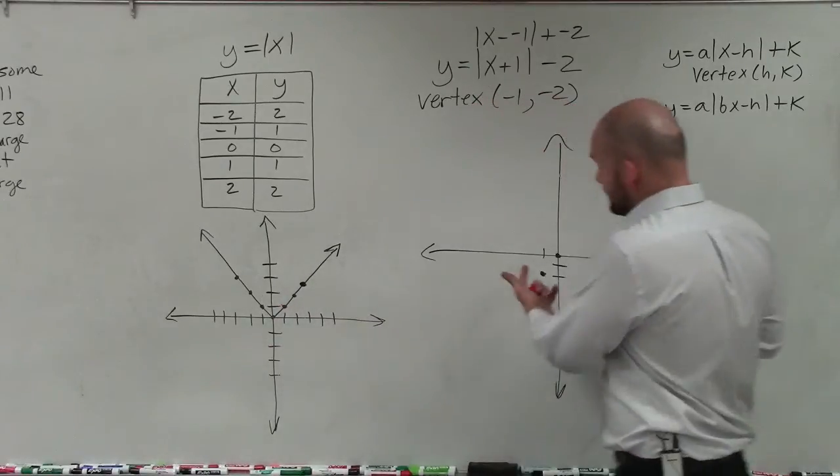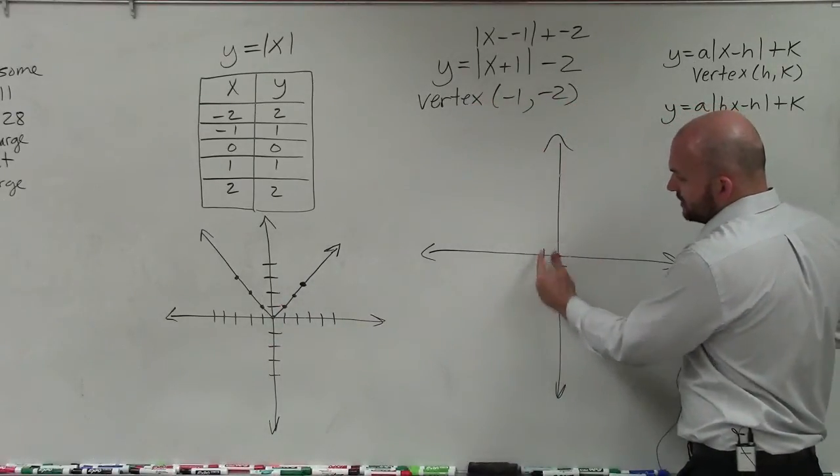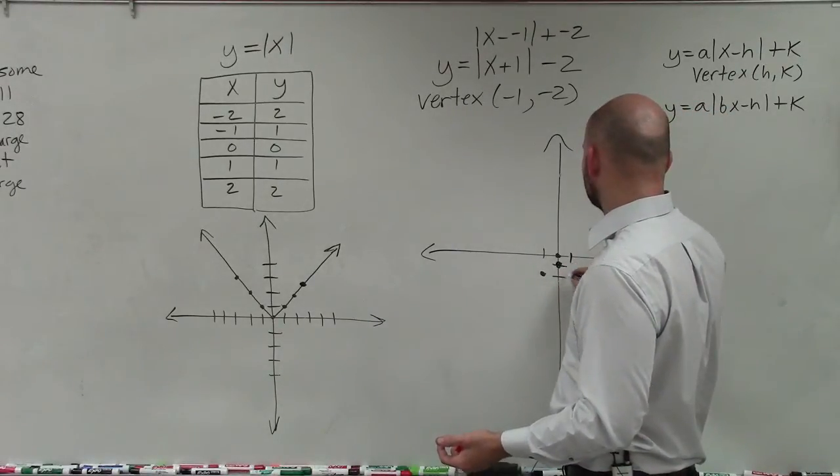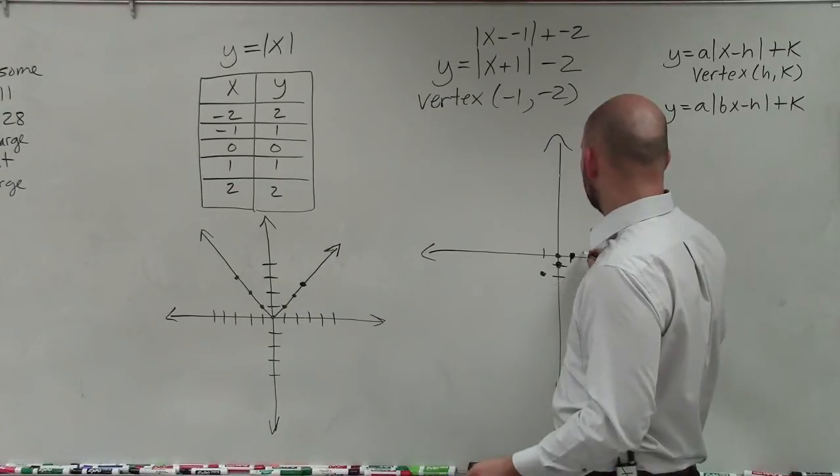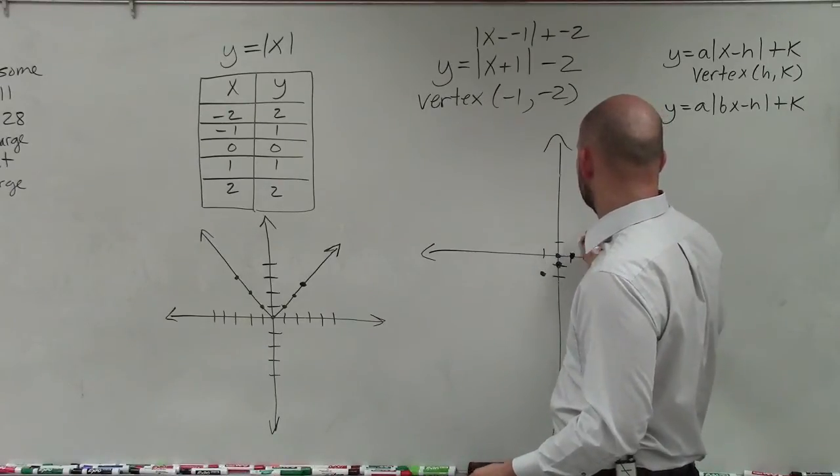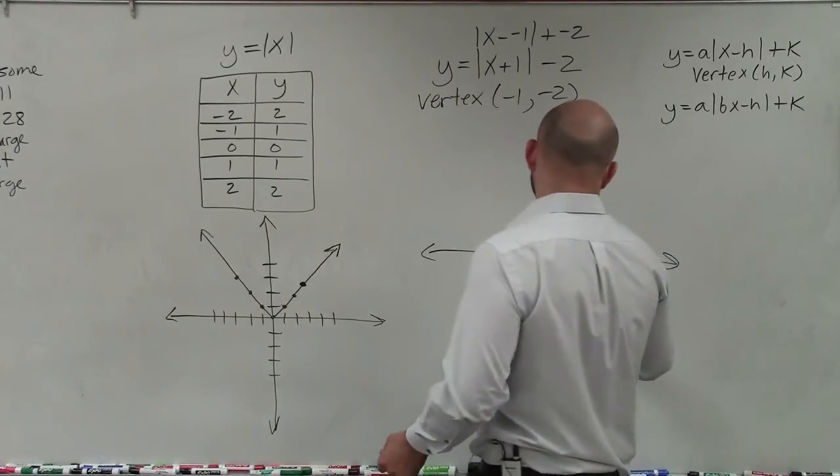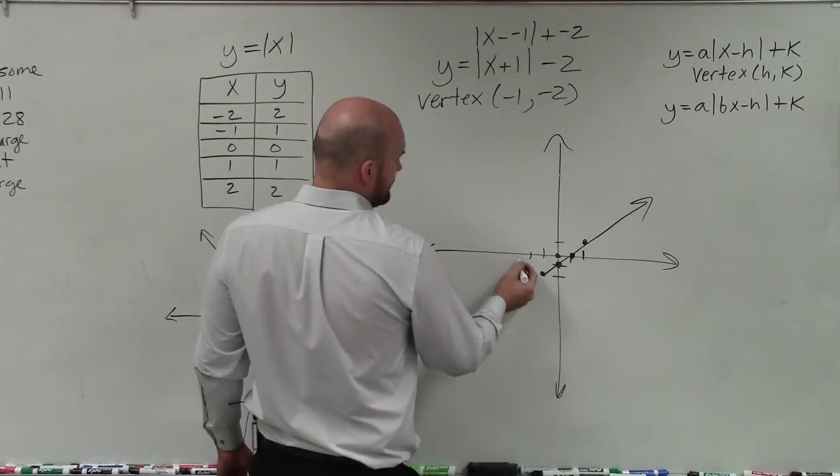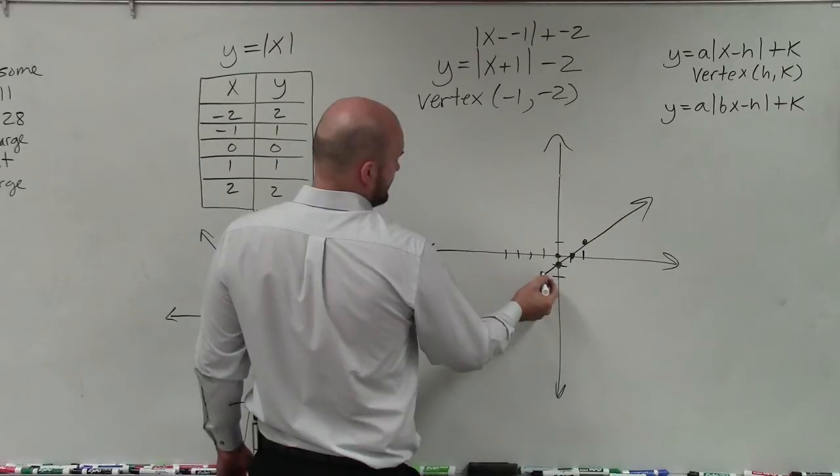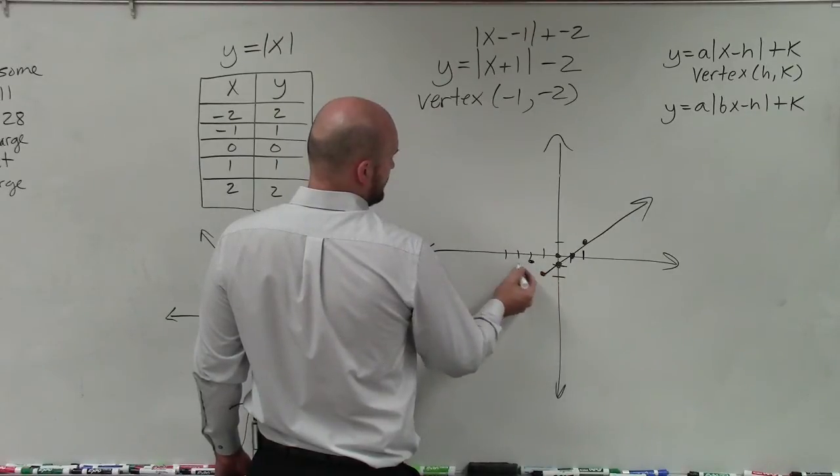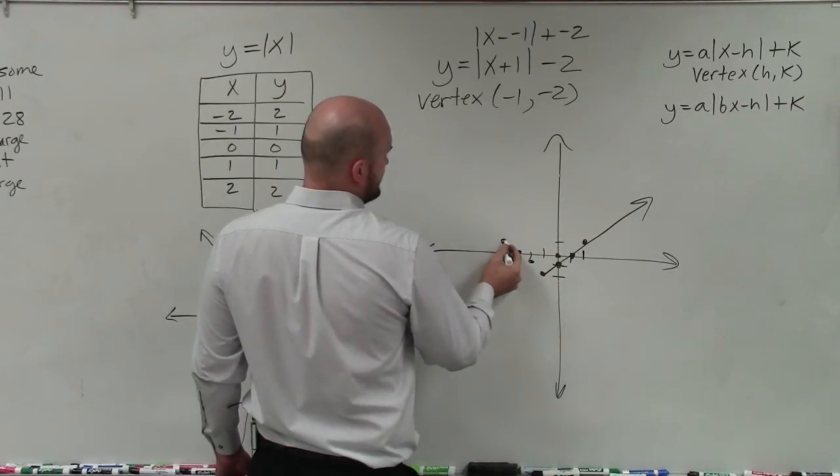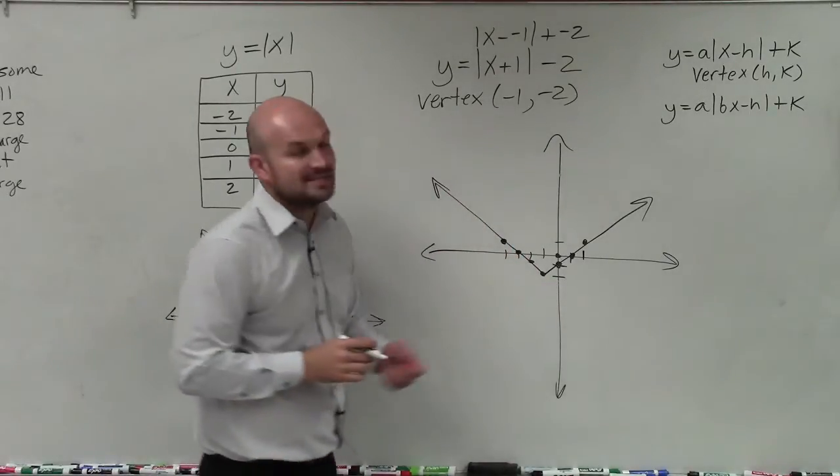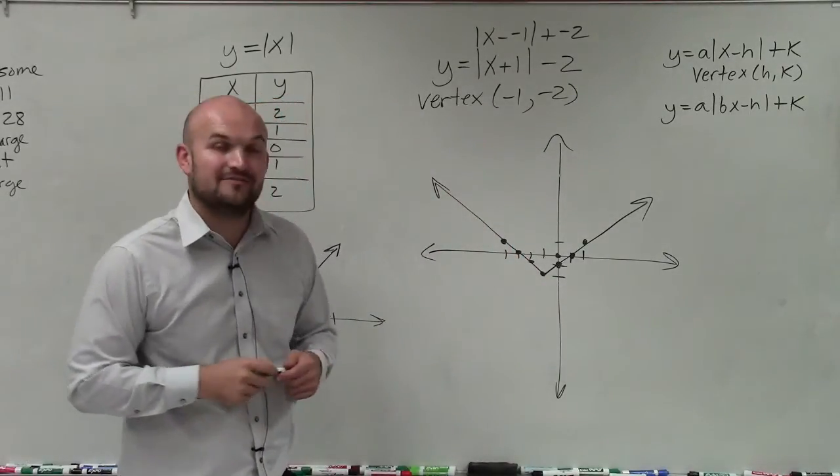So if I know that my vertex has been transferred over one and down two units, I can just follow that pattern to find my next coordinate points. And you don't need to graph a thousand points. You really just pretty much need a couple on each side. And there you go, ladies and gentlemen. That is now the new graph of my absolute value function. Thanks.